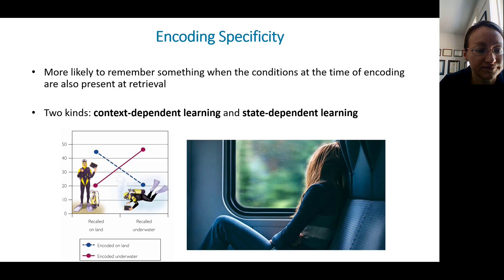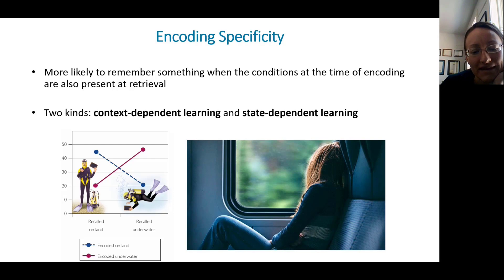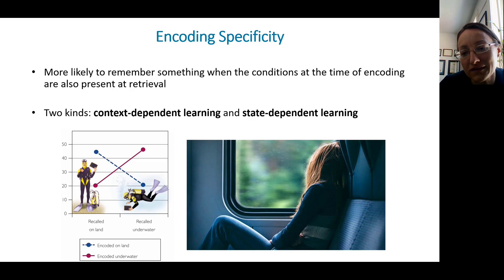Then there's state-dependent learning. We're more likely to recall information that was encoded when we were in the same psychological or physiological state at the time of encoding as at the time of retrieval. For example, if somebody gets drunk and loses their keys, they might have to get drunk again to remember where they put them. If you are feeling sad or angry, you're more likely to think of past events that made you feel sad or angry, but if you're feeling happy, happy things are more likely to pop into your head.